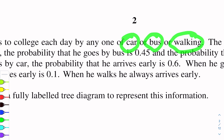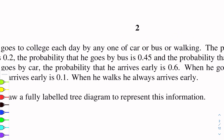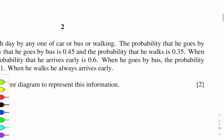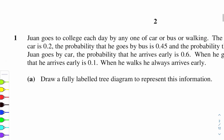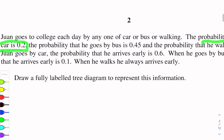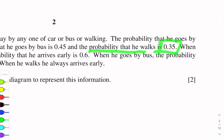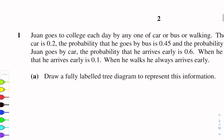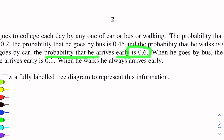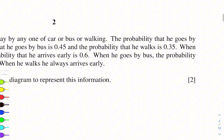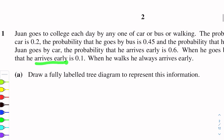There are three options to go to college: car, bus, or walking. The probability that he goes by car is 0.2. The probability that he goes by bus is 0.45, and the probability that he walks is 0.35. When Johan goes by car, the probability that he arrives early is 0.6. When he goes by bus, the probability that he arrives early is 0.1. When he walks, he always arrives early.